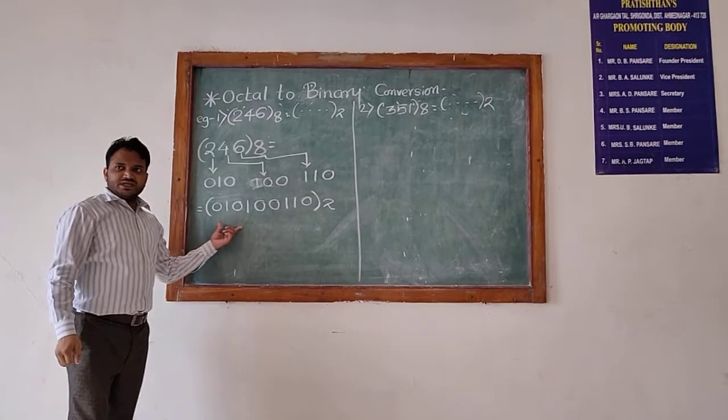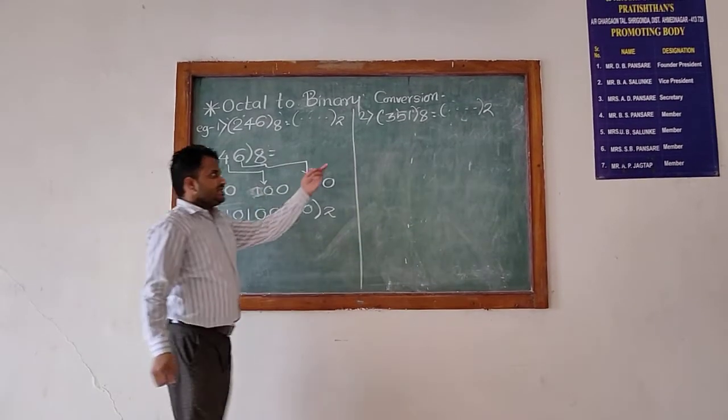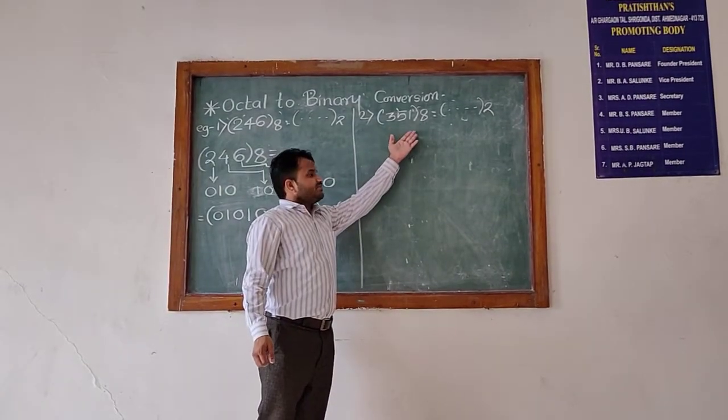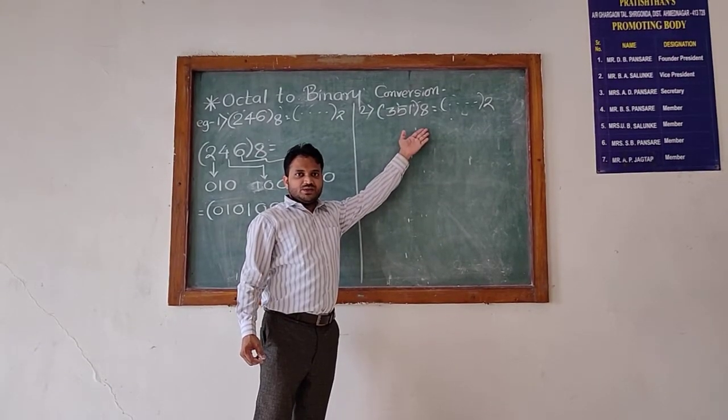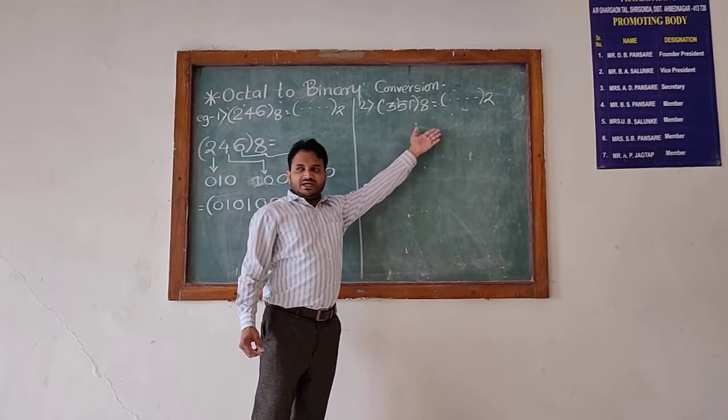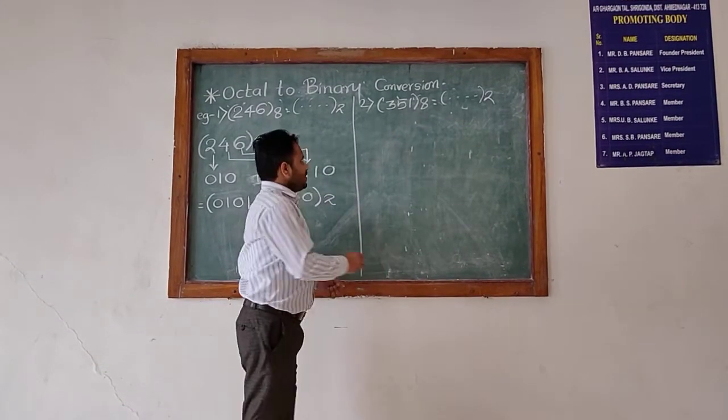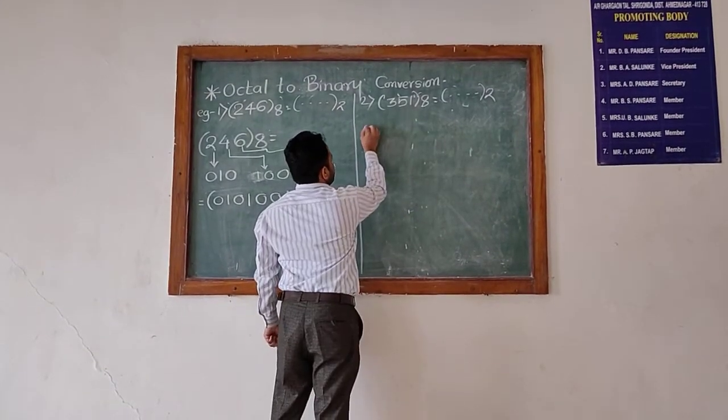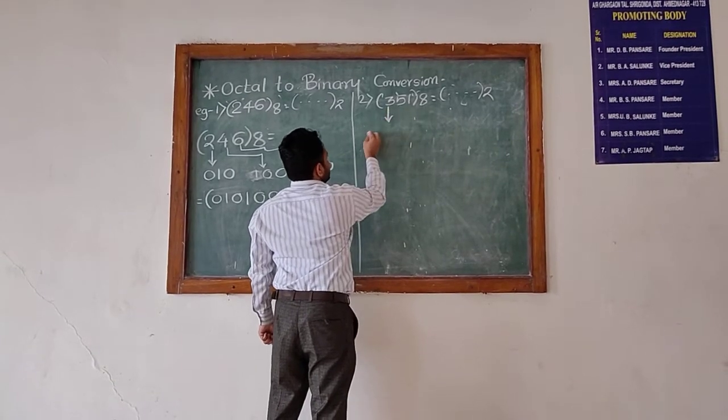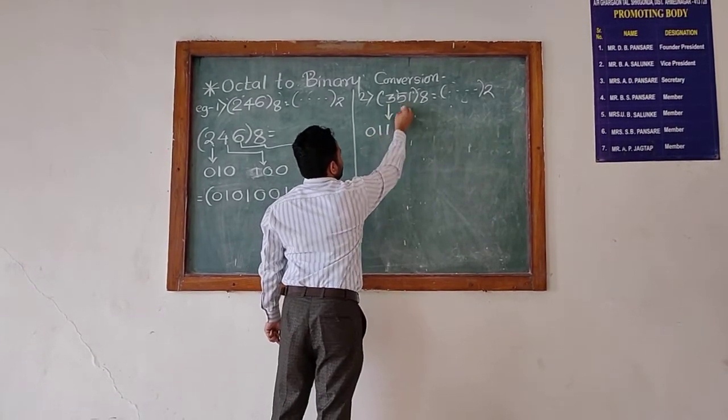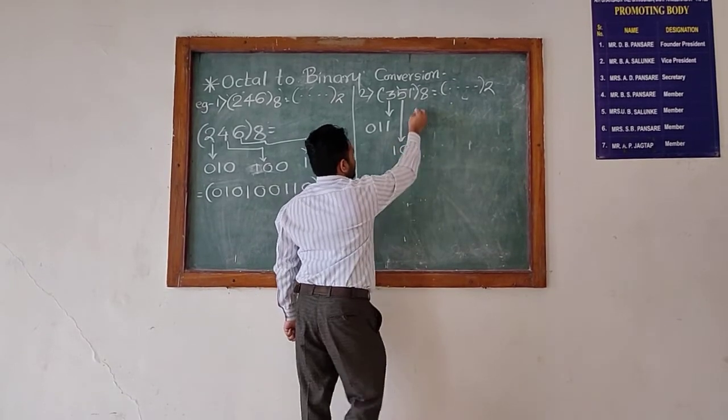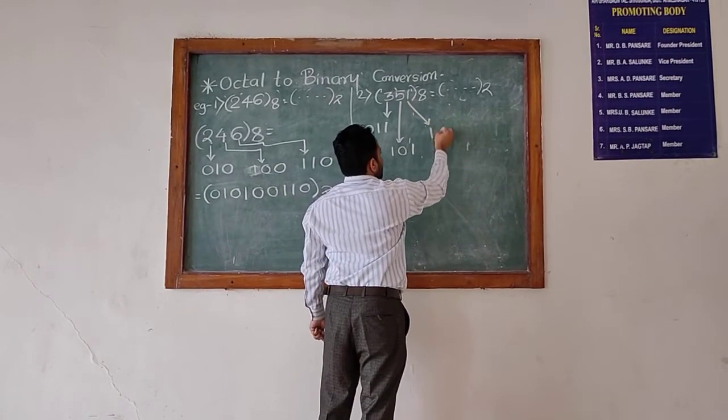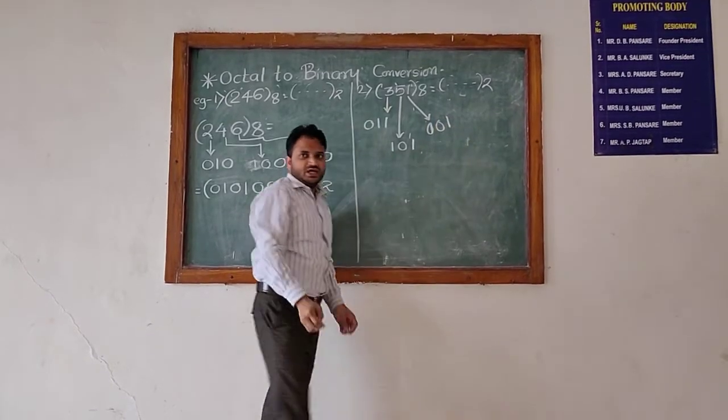If you want the particular procedure, then you can easily find the answer for this question. That is 351 in the octal and you have to convert it to the equivalent binary. So we know that for 3, the equivalent is 011. For 5, it is 101. And for 1, it is 001.